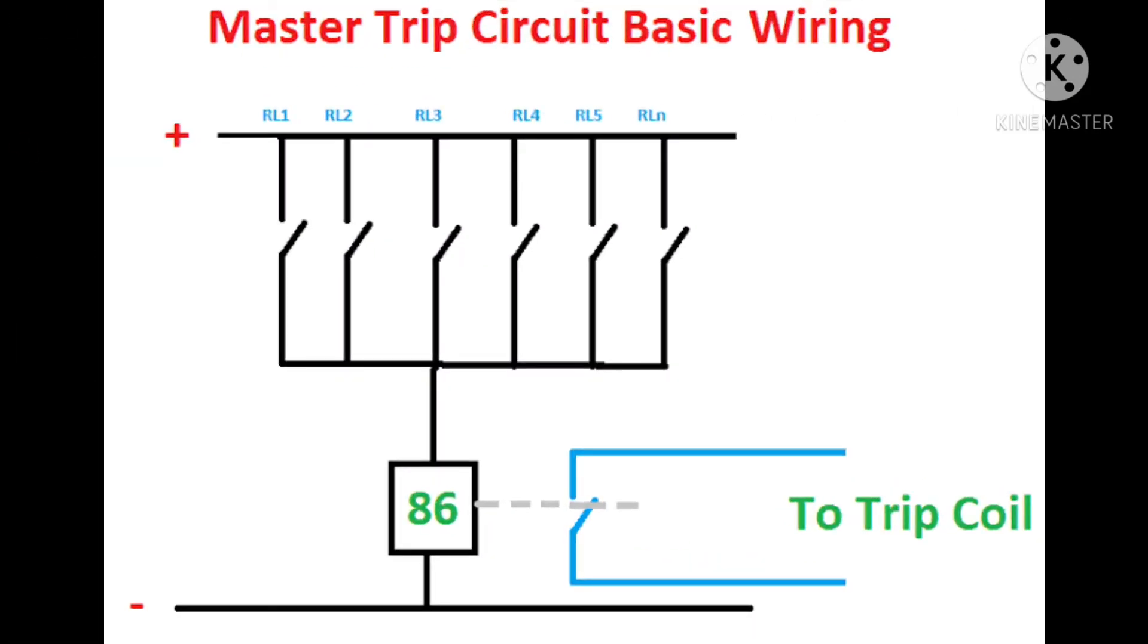Now in this figure we can see there are six input terminals coming from protective relays. All the terminals and cables are connected in parallel with master trip relay, and one neutral cable is also connected.